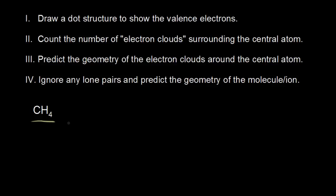Let's figure out the shape of the methane molecule using VSEPR theory. The first thing you do is draw a dot structure to show the valence electrons. For methane, carbon is in group 4, so 4 valence electrons. Hydrogen is in group 1, and I have 4 of them. So 1 times 4 is 4, plus 4 is 8 valence electrons that we need to show in our dot structure.